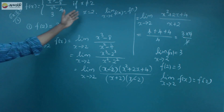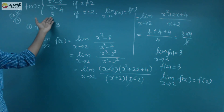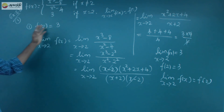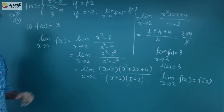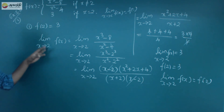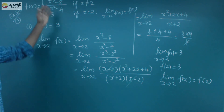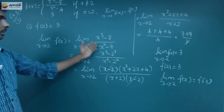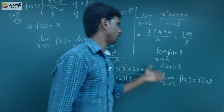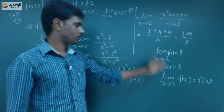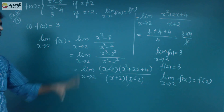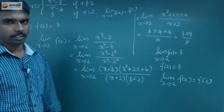So we have proved that the limit as x tends to 2 of f(x) equals f(2), which equals 3. This satisfies the continuity condition: limit as x tends to c of f(x) equals f(c). Therefore, the function is continuous at x=2.